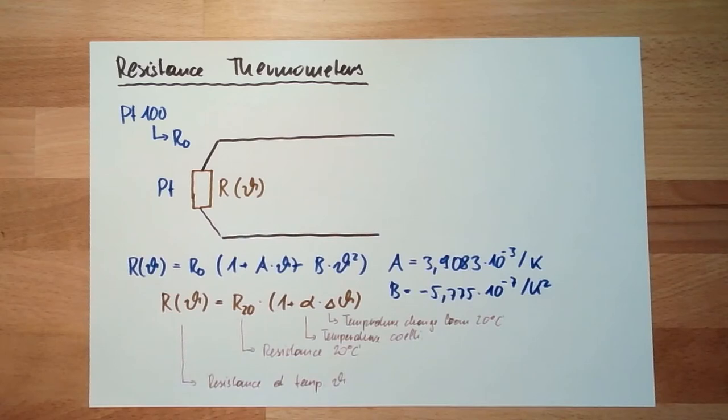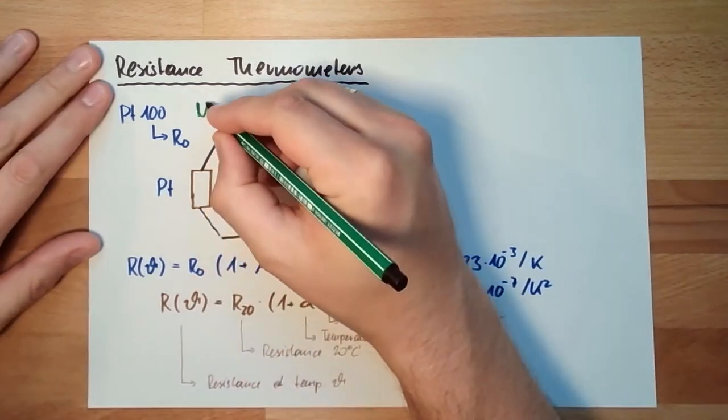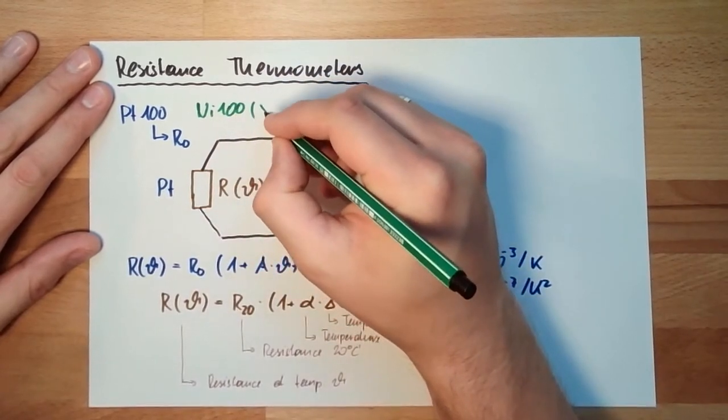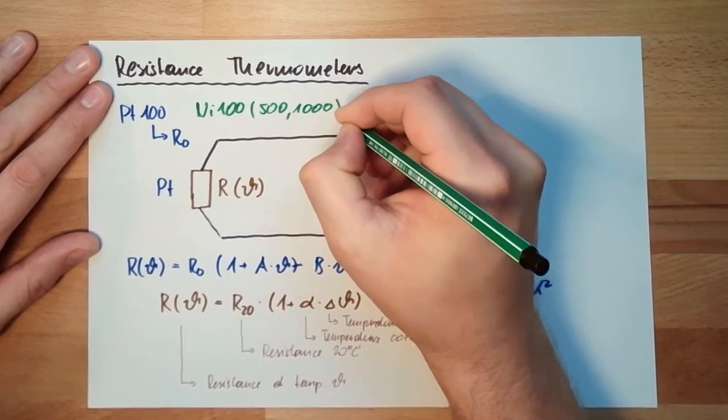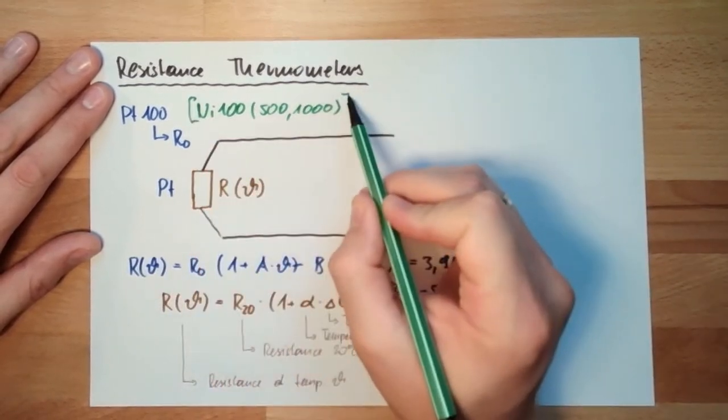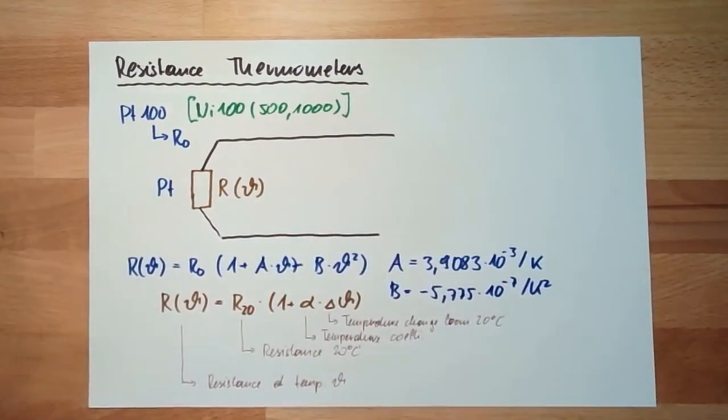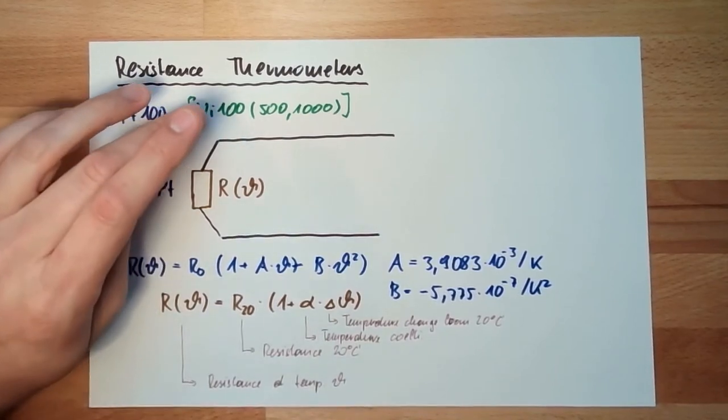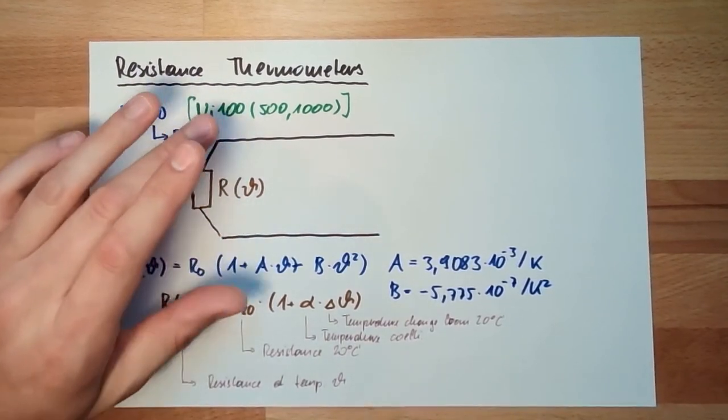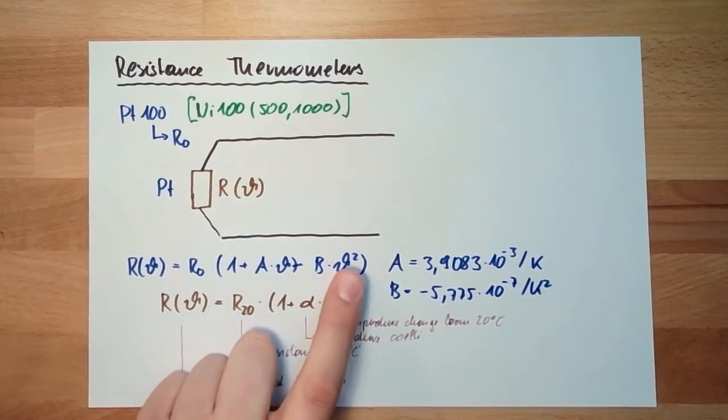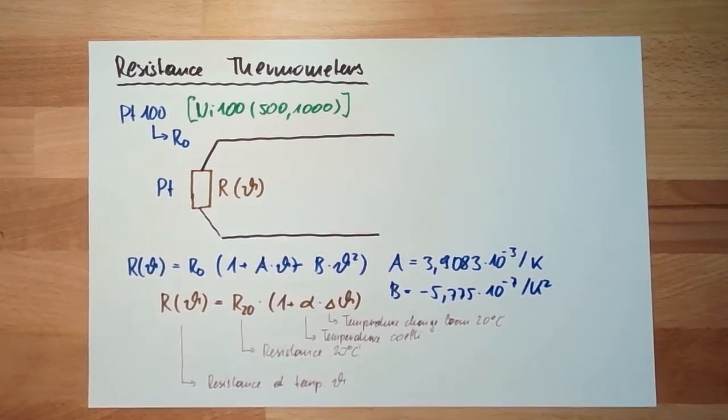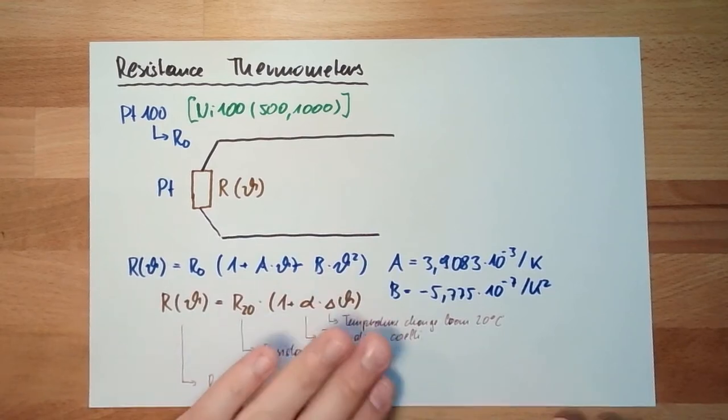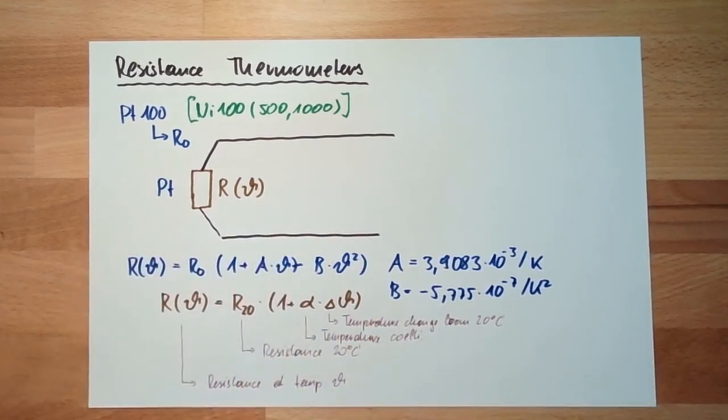There was also nickel materials. There was also NE100 and then 500 and 1000. But I've put brackets around here. They are not used anymore because platinum is simply better. This is the resistance thermometer. For nickel we would need up to the sixth power, especially under zero degrees Celsius there is quite some offset.